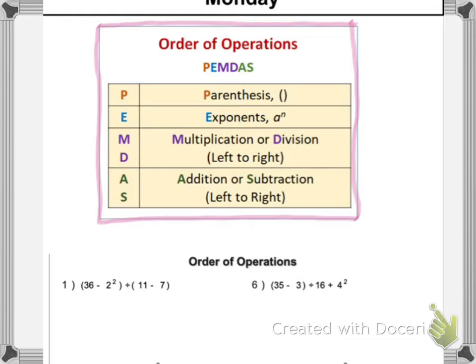we have 36 minus 2 squared divided by 11 minus 7. So the first thing I notice is there are parentheses. So within those parentheses, I'm going to run through that list of order of operations. So the first thing I need to look for is do I have exponents, and I do. Here is an exponent right here. So I'm going to rewrite my problem as 36 minus 2 squared is 2 times 2, which is 4.